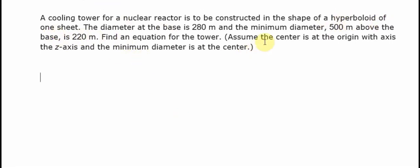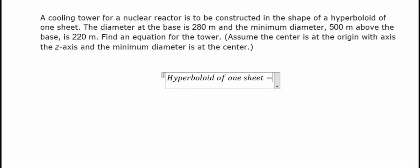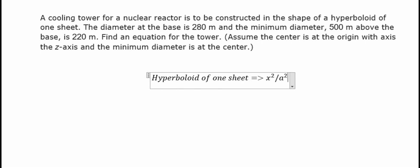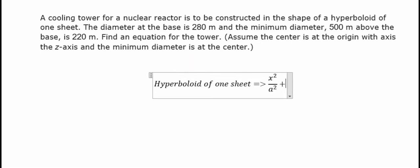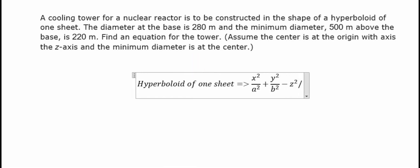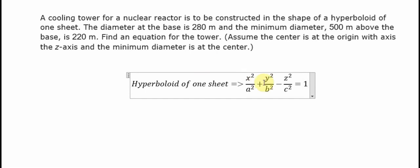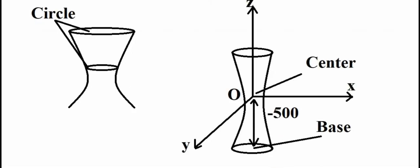We know that for a hyperboloid of one sheet, the formula is: x² divided by a² plus y² divided by b² minus z² divided by c² equals 1. This is the first step.